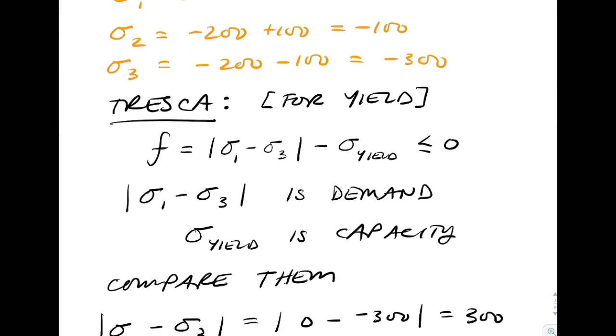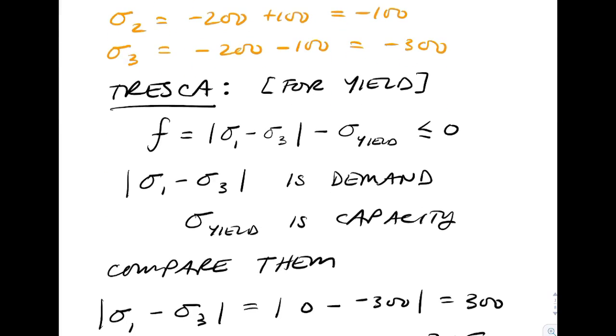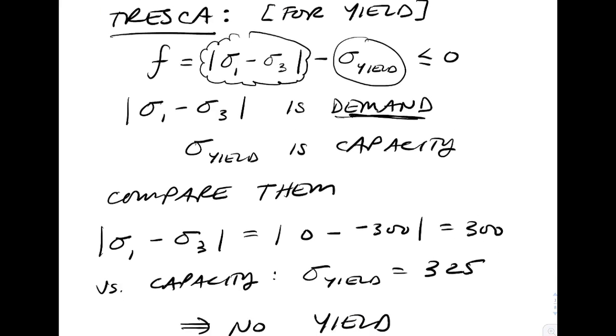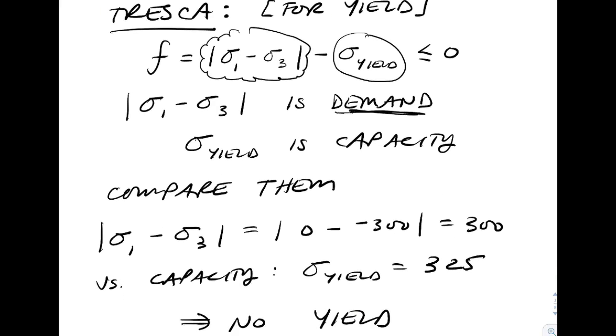Off the equation sheet, the Tresca criteria involves sigma 1 minus sigma 3, comparing it to sigma yield. I like to think of this term as the demand on the material. This obviously is the capacity of the material, and we're going to compare the two.